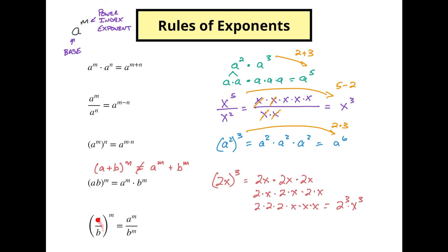It also works with division. If we have 2 over x, we'll do the same idea: (2 over x) cubed means 2 over x times 2 over x times 2 over x. When multiplying fractions, we multiply the numerators and the denominators, so that gives us 2 cubed over x cubed. Again, we can see the different bases with the same exponent in both the numerator and denominator.